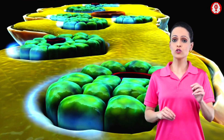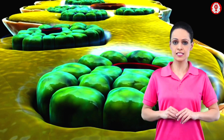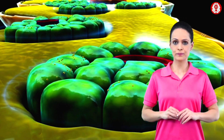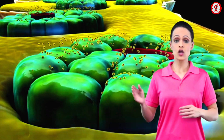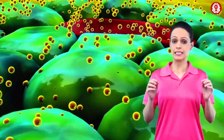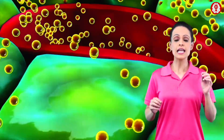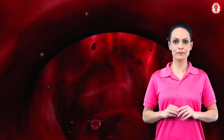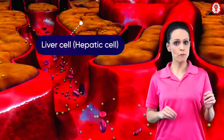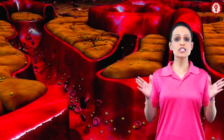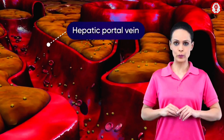The sectional view of the pancreas also shows a small group of cells known as islets of Langerhans. These islet cells release a hormone known as insulin, which is absorbed into the blood vessels around the pancreas. These blood vessels transport the insulin from the pancreas to the liver cells, which are supplied by the hepatic portal vein.